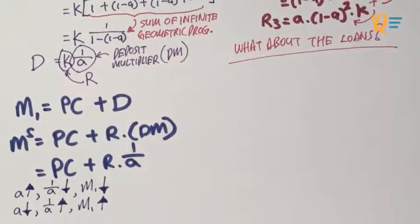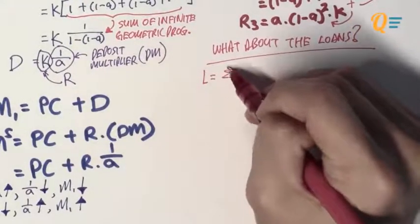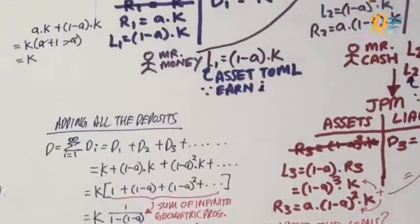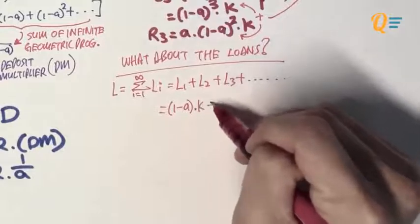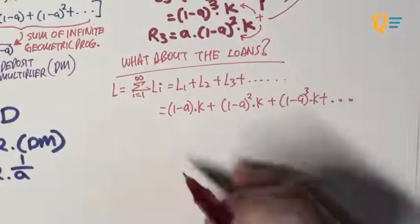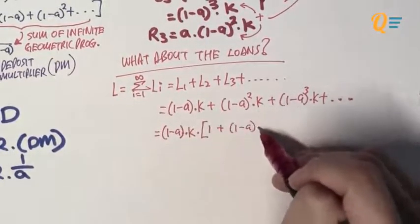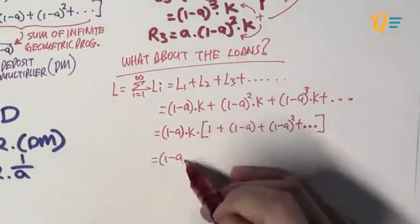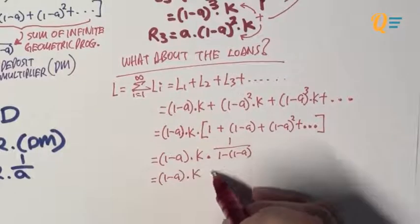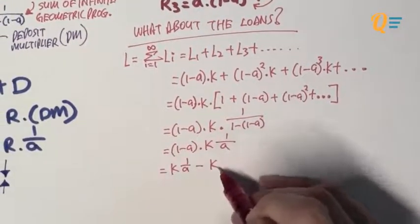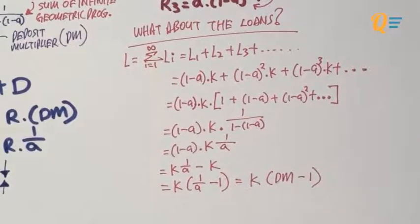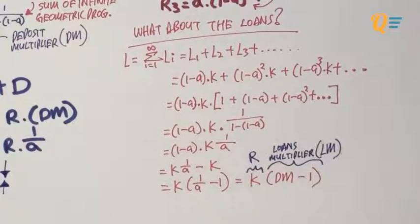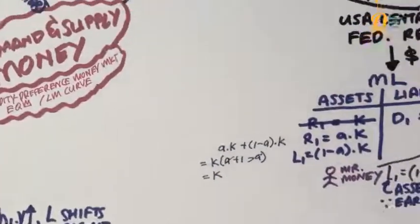Now let's look at the total loans made in this economy: L1 + L2 + L3 + .... Factorizing (1 − α) × K and summing the geometric progression to infinity, the total amount of loans = K × (1/α − 1), where (1/α − 1) is the loans multiplier and K is the first reserve ever made in this economy.